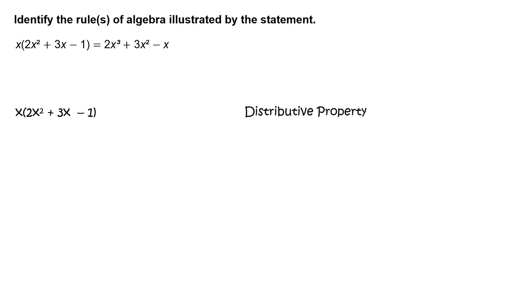Next, use the distributive property to get x times 2x squared, x times 3x, and x times negative 1.